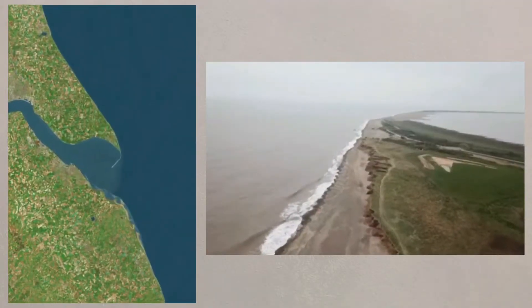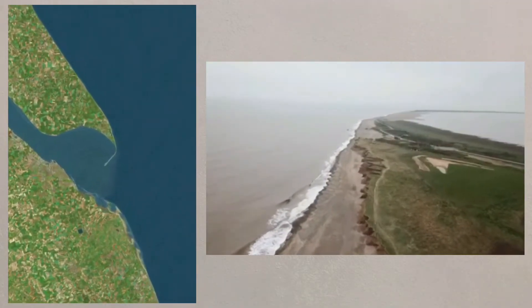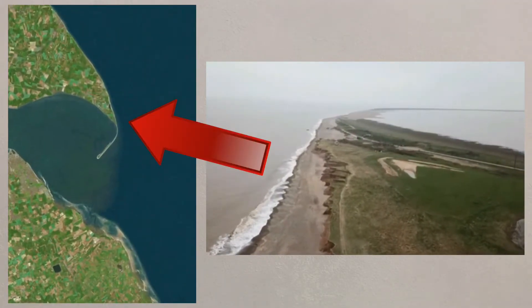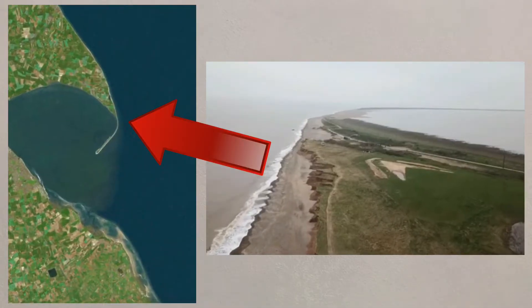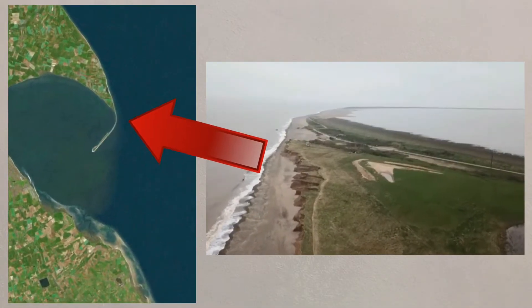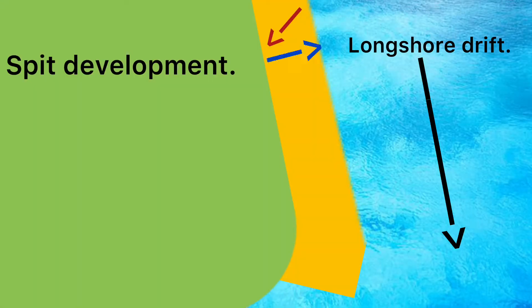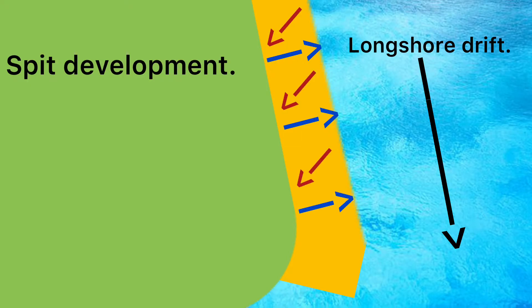Spits form on coasts where there is a great amount of longshore drift, and where the coastline changes direction sharply, often at river mouths. Longshore drift will continue in the same direction, but will deposit material from the point where the land changes direction out into the sea.